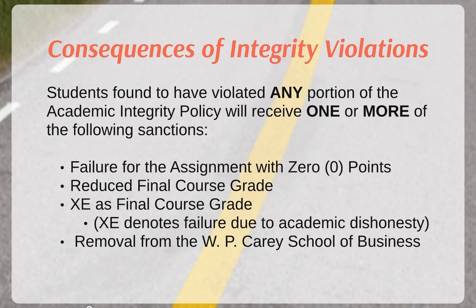The consequences of academic integrity violations can be many. Students who have been found to violate any portion of the policy will receive one or more of the following sanctions: one, failure for the assignment with zero points; two, a reduced final course grade; three, an XE listed as the final course grade on your transcript. This XE is a special designation used to denote failure due to academic dishonesty.